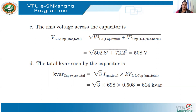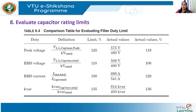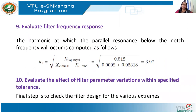Once all values are obtained, the next step is to evaluate against the IEEE standard limits. For 480 V systems, the IEEE standard provides limits for peak voltage, RMS voltage, RMS current, and kVAR. We must verify that the calculated values are within 110–120 percent of those standard values. It is general practice to always cross-check with the standard.